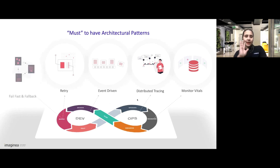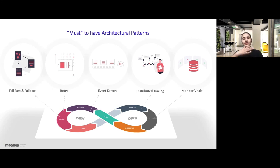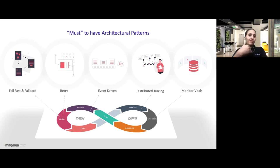Number five: fail first and fall back. What does it actually mean — is failure a desirable state? It's basically a behavior where service A can try to wait for service B for some time, and if it is not responding, just go back with a plan B. That's the fallback method.